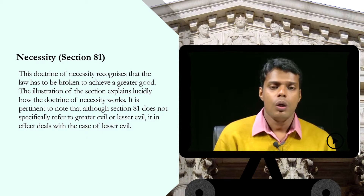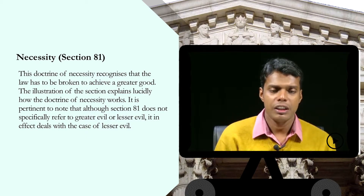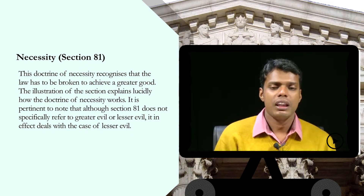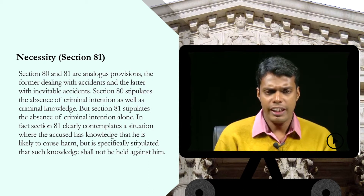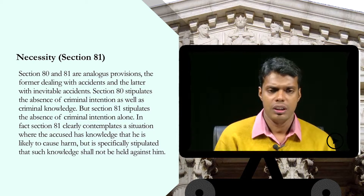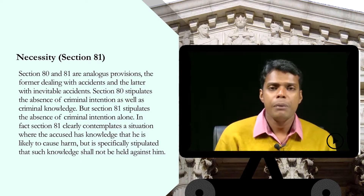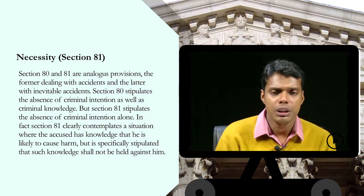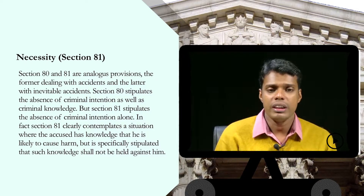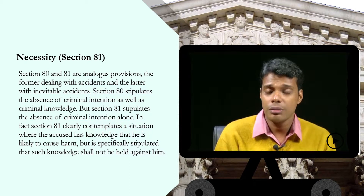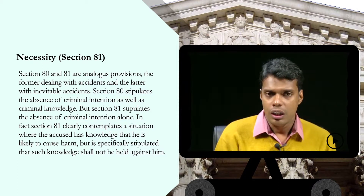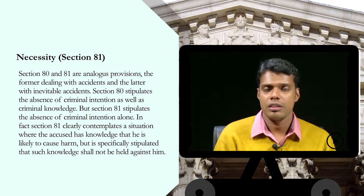Although Section 81 does not specifically refer to greater evil or lesser evil, it in effect deals with the case of lesser evil. Sections 80 and 81 are analogous provisions, the former dealing with accidents and the latter with inevitable accidents. Section 80 stipulates the absence of criminal intention as well as criminal knowledge, whereas Section 81 stipulates the absence of criminal intention alone. There is an intention, but it is not criminal — the intention was to avoid the greater evil.